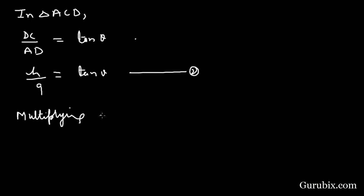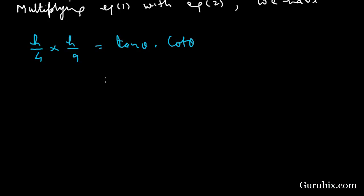And now we shall be multiplying equation number 1 with equation number 2. We have H over 4 times H over 9 equals tan theta. And we know that tan theta times cot theta equals 1.